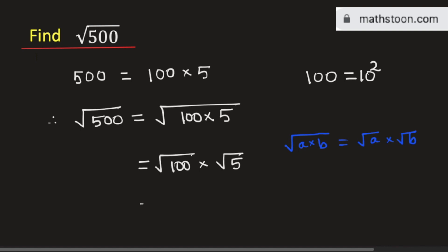We know that square root of 100 is 10 and square root of 5 remains the same. So multiplying this we get 10 square root of 5.